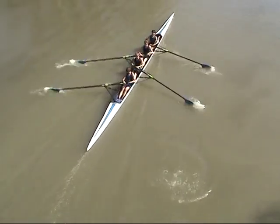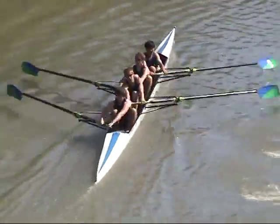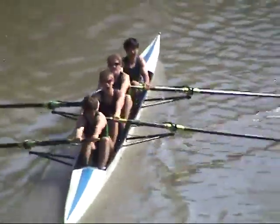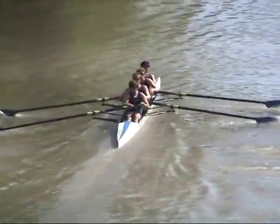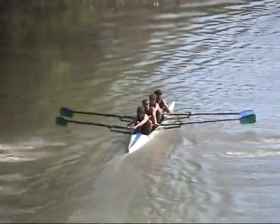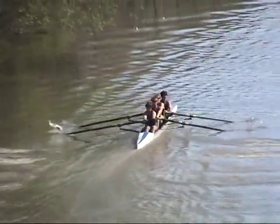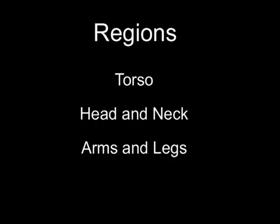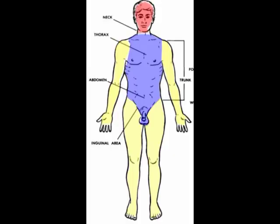The human body is a single total composite — everything works together, each part acting in association with all other parts, yet it is also a series of regions, each responsible for certain body activities. These three regions are called the torso, the head and neck, and the arms and legs. The torso includes the back and the trunk; the trunk includes the thorax or chest and abdomen. At the lower end of the trunk is the pelvis. The perineum is the portion of the body forming the floor of the pelvis.